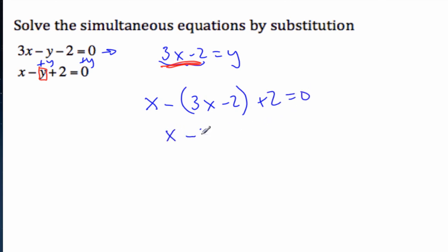And so now I get x minus 3x, careful of the negative sign, plus 2, plus 2 more is 0. So negative 2x plus 4 equals 0. Negative 2x equals minus 4. And so then x is equal to 2.